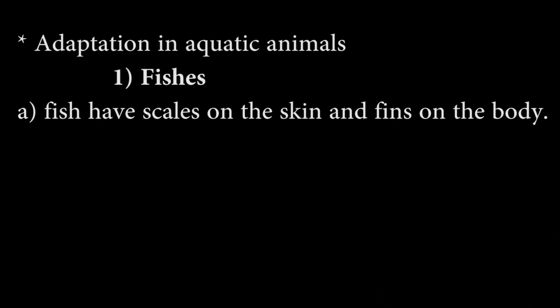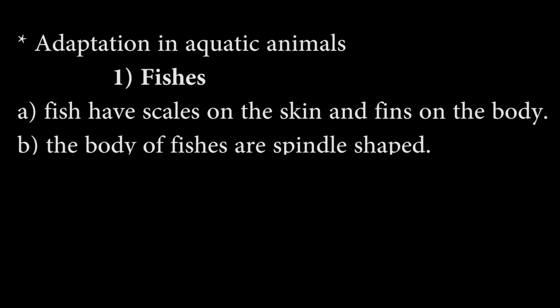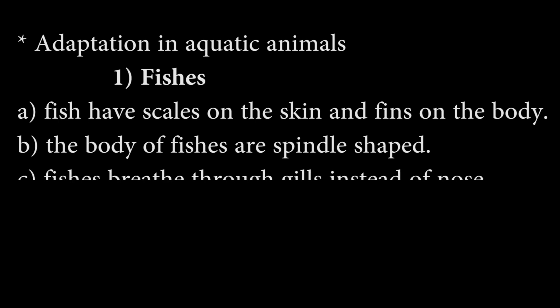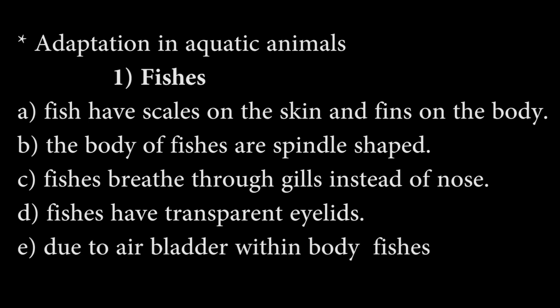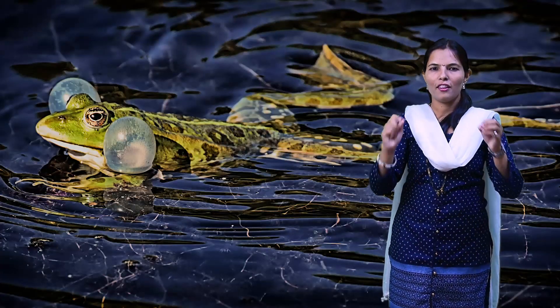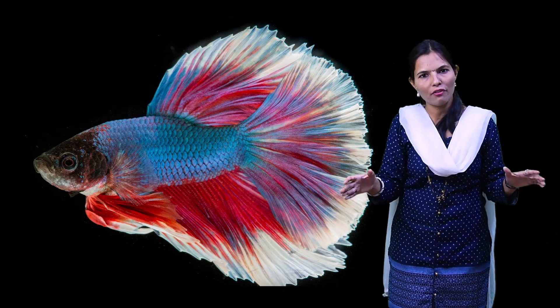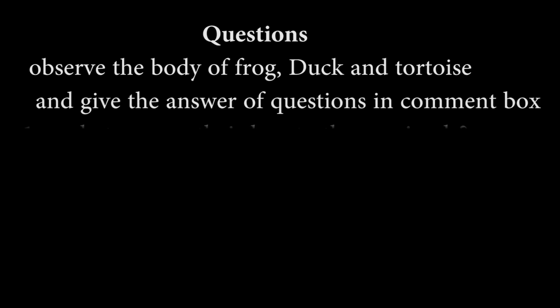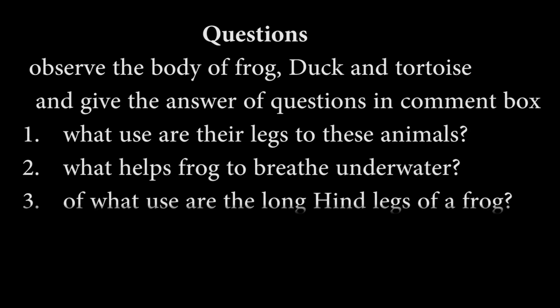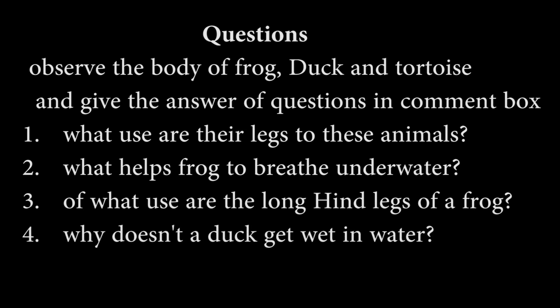So let's review the adaptations of fishes. First, fishes have scales on the skin and fins on the body. Second, their body tapers towards both ends — they have a spindle-shaped body. Third, fishes breathe with gills instead of a nose. Fourth, their eyes have transparent eyelids. And last, they have an air bladder within the body to help them float. Students, in this video also observe a frog, crocodile, and fishes. Questions: What is the use of their legs? What helps a frog breathe underwater? What is the use of the long hind legs of a frog? And why doesn't a duck get wet in water?